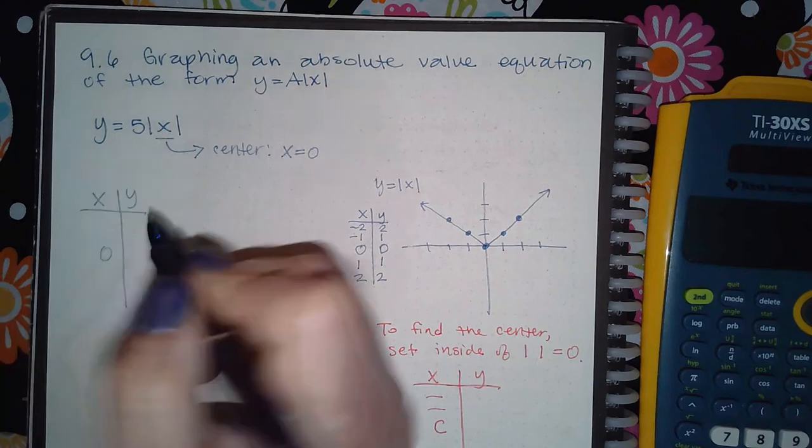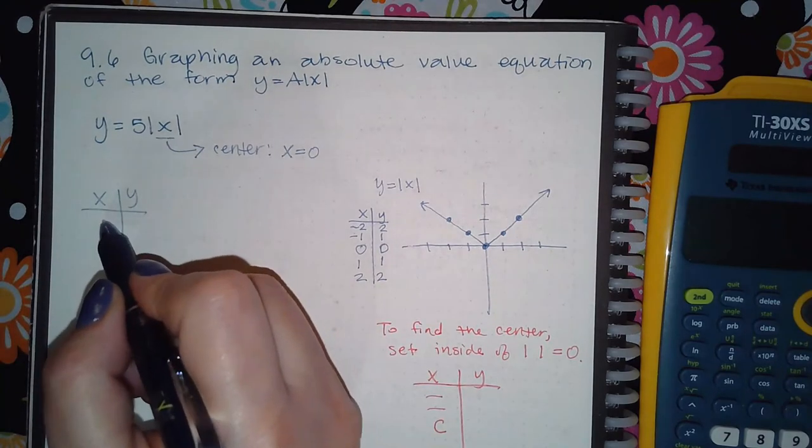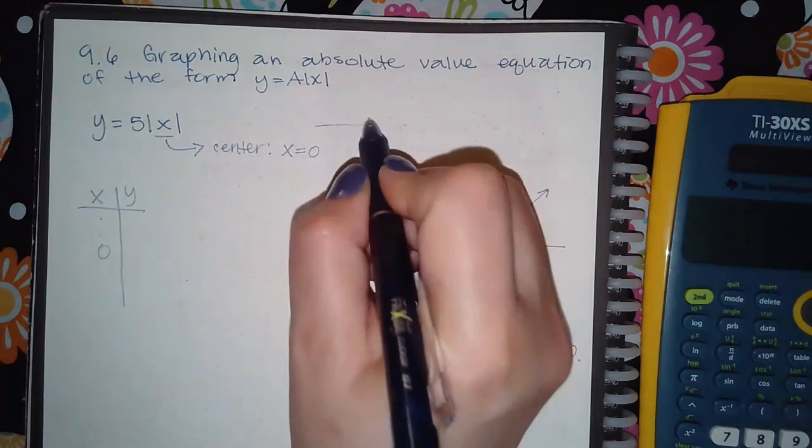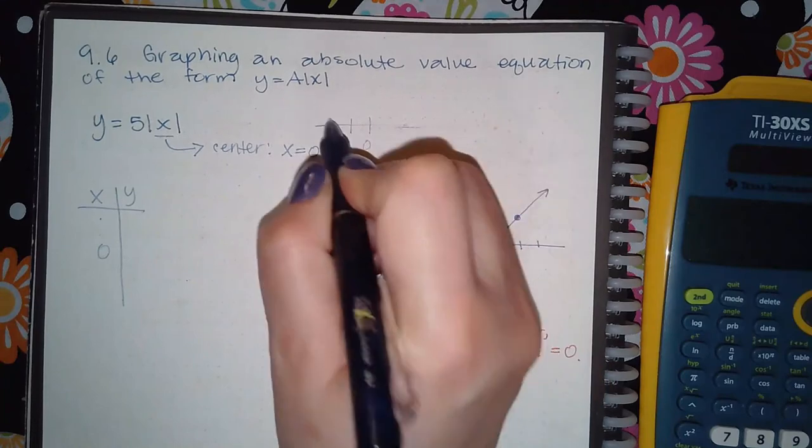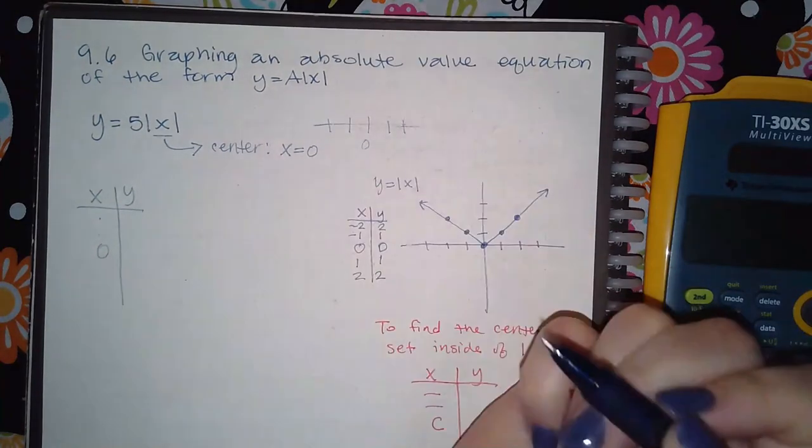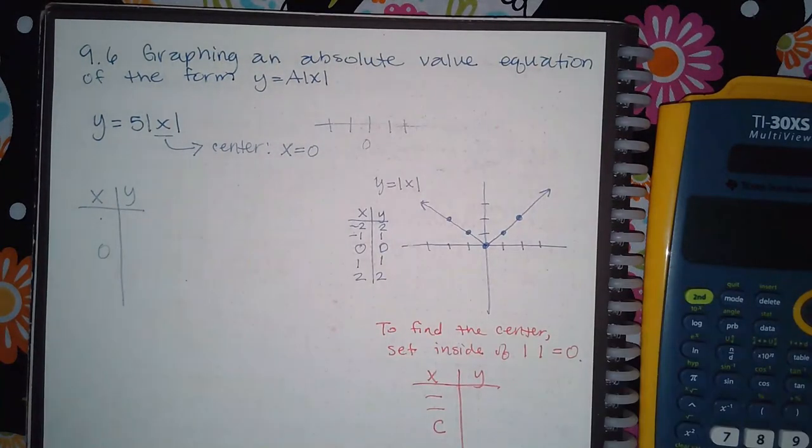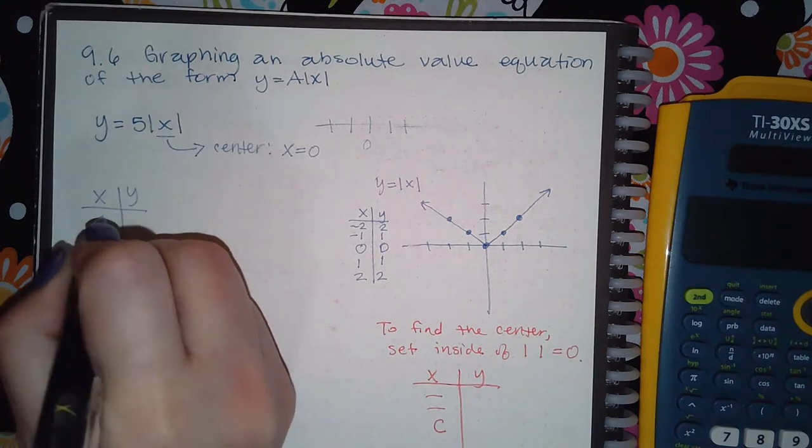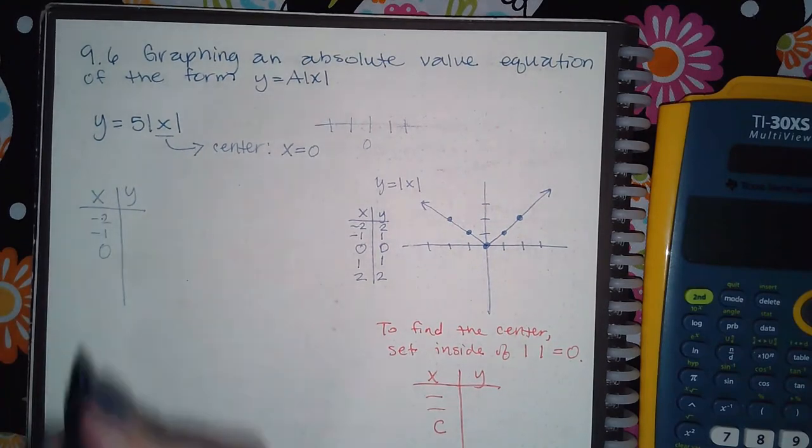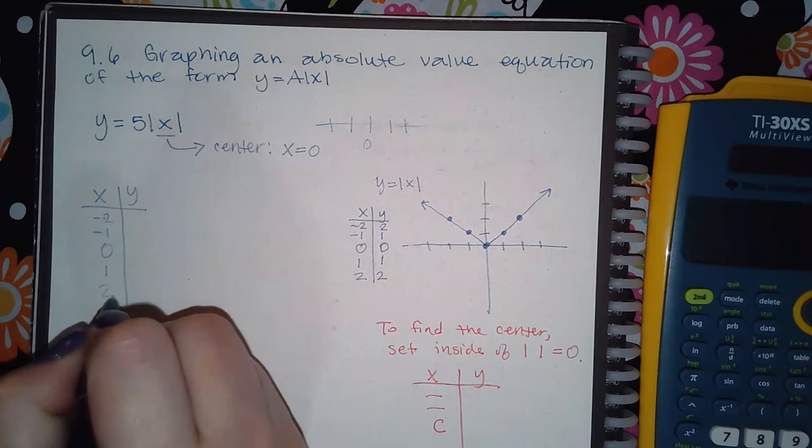And then I'm going to pick two points to the left of zero, so think of a number line. Here's zero. Pick two values to the left and then two values to the right. So to the left of zero would be negative one and negative two. And to the right of zero would be positive one and positive two.